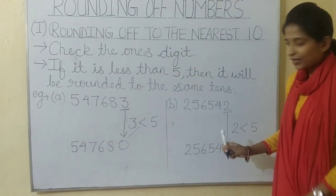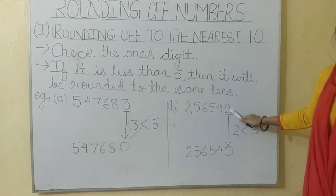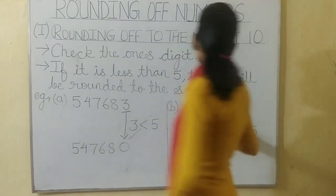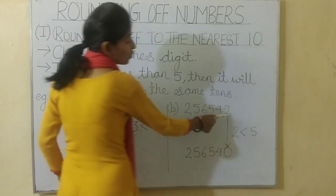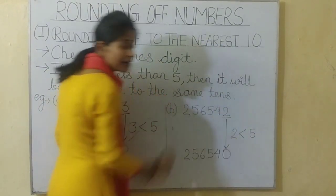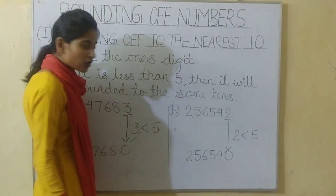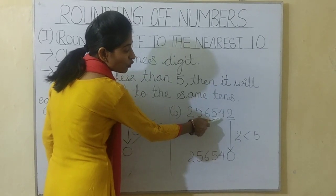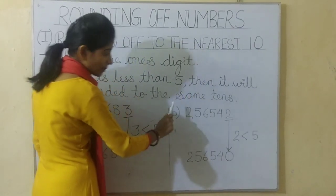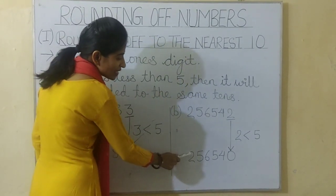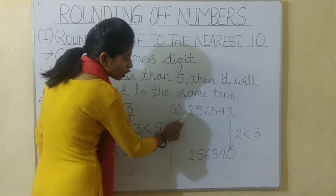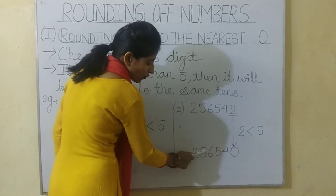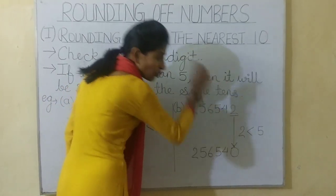One more example. Here also the one's digit is 2, and 2 is less than 5, so the ten's digit 4 will remain the same. So the answer will be 256540.